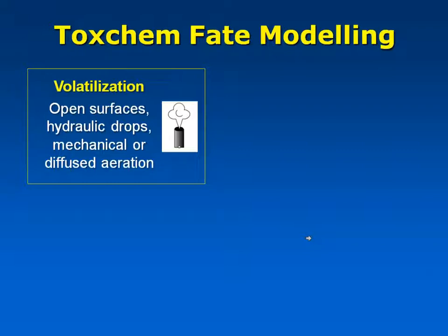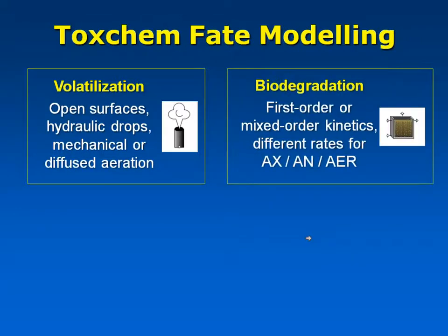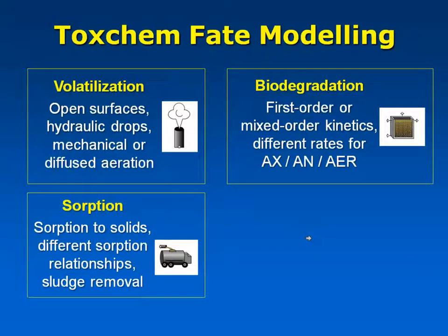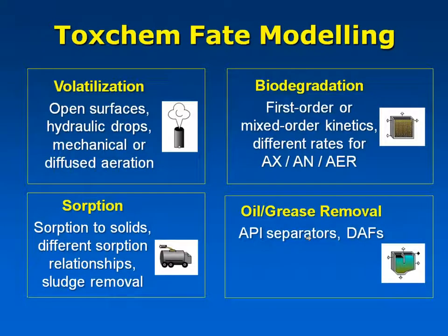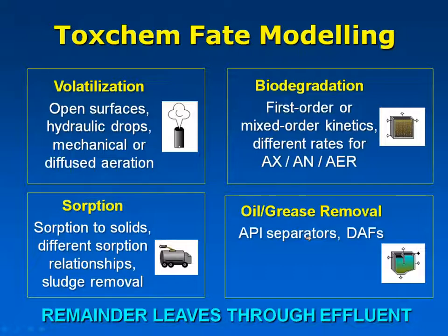ToxChem models four fate pathways. First, volatilization at any open surface, hydraulic change, or turbulence. Second, biodegradation using first-order kinetics and other approaches — simpler than GPSX but relatively sophisticated. Third, sorption of different components onto the sludge based on different sorption relationships and levels of hydrophobicity. Fourth, capture into oil or grease removed from the system. Whatever remains after accounting for these pathways goes out through your effluent.